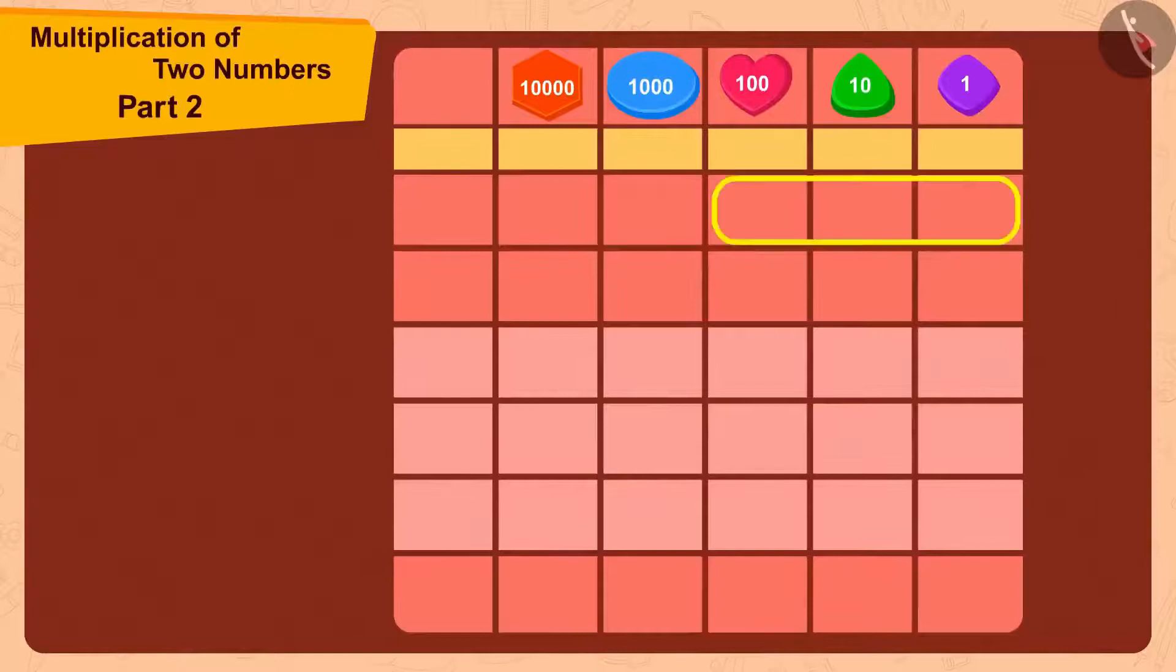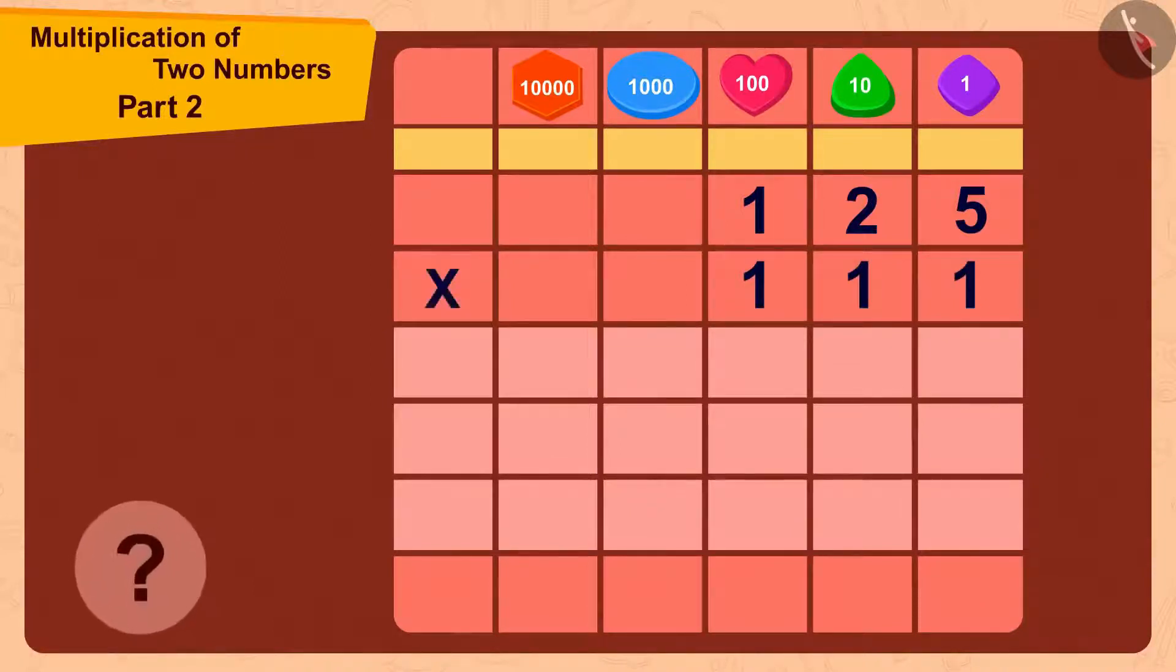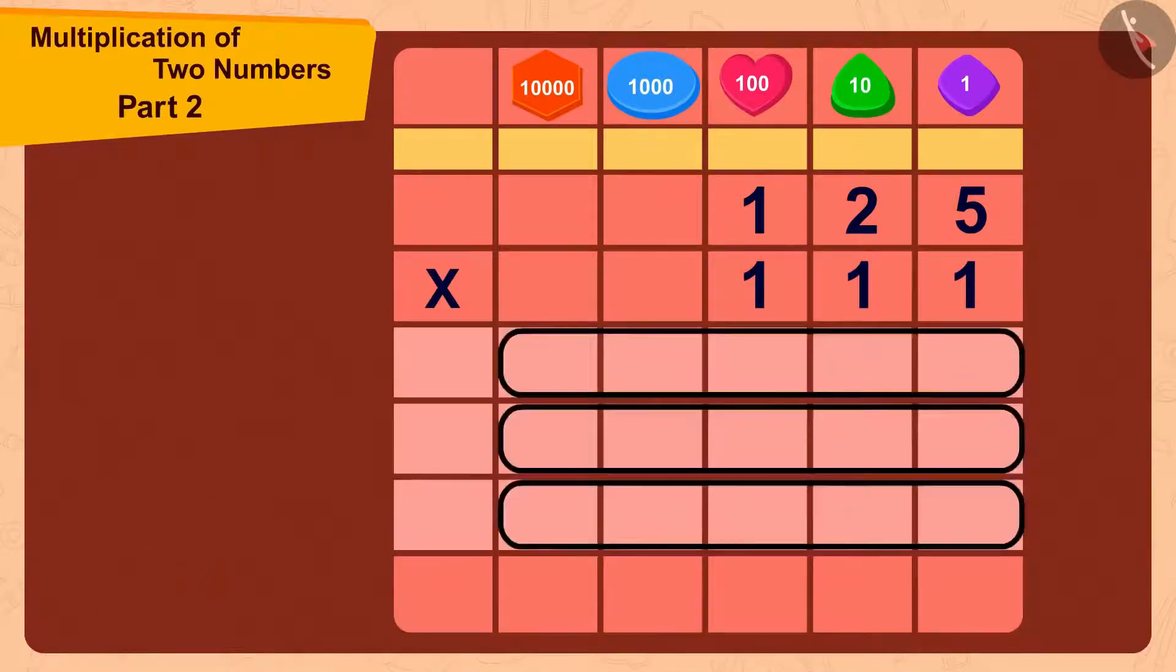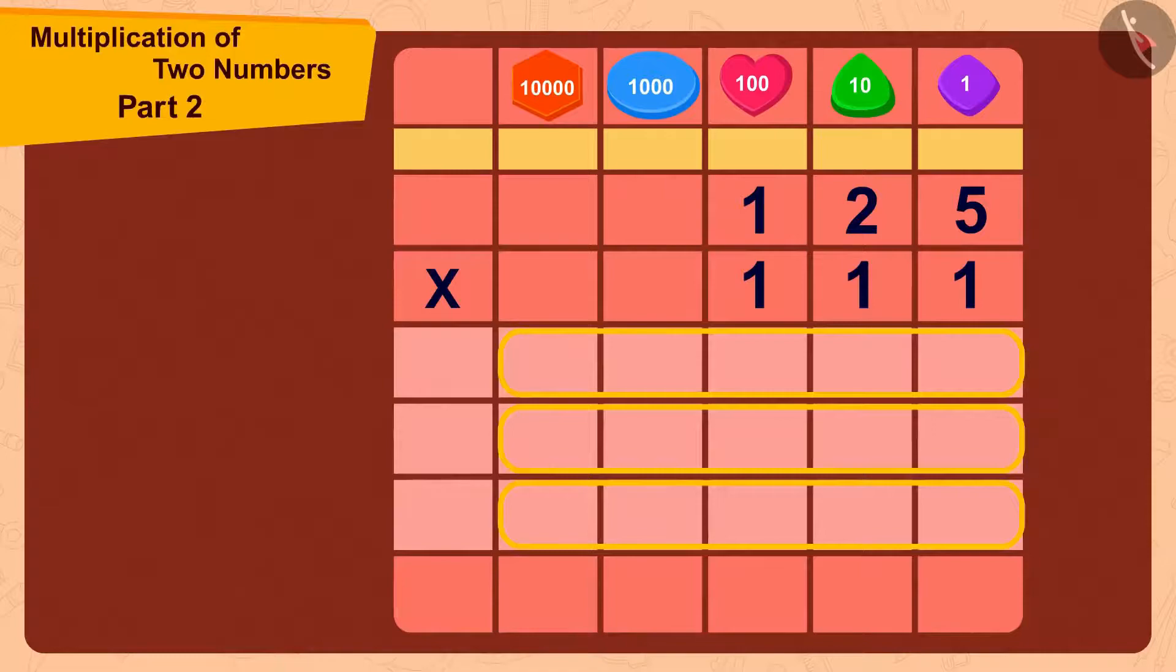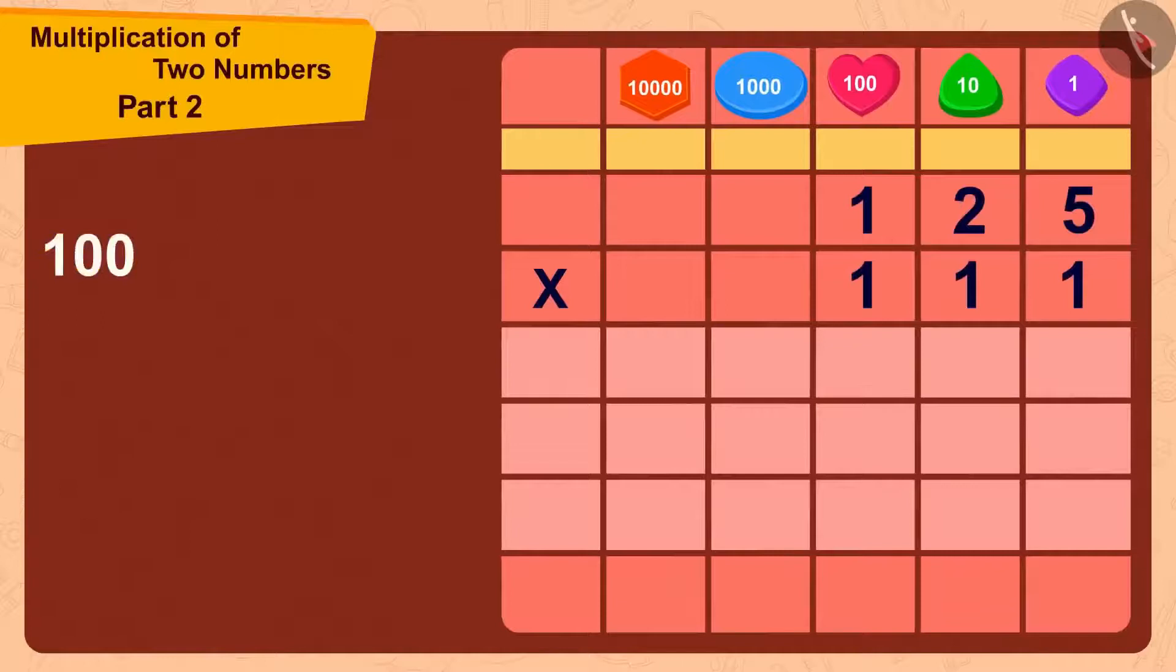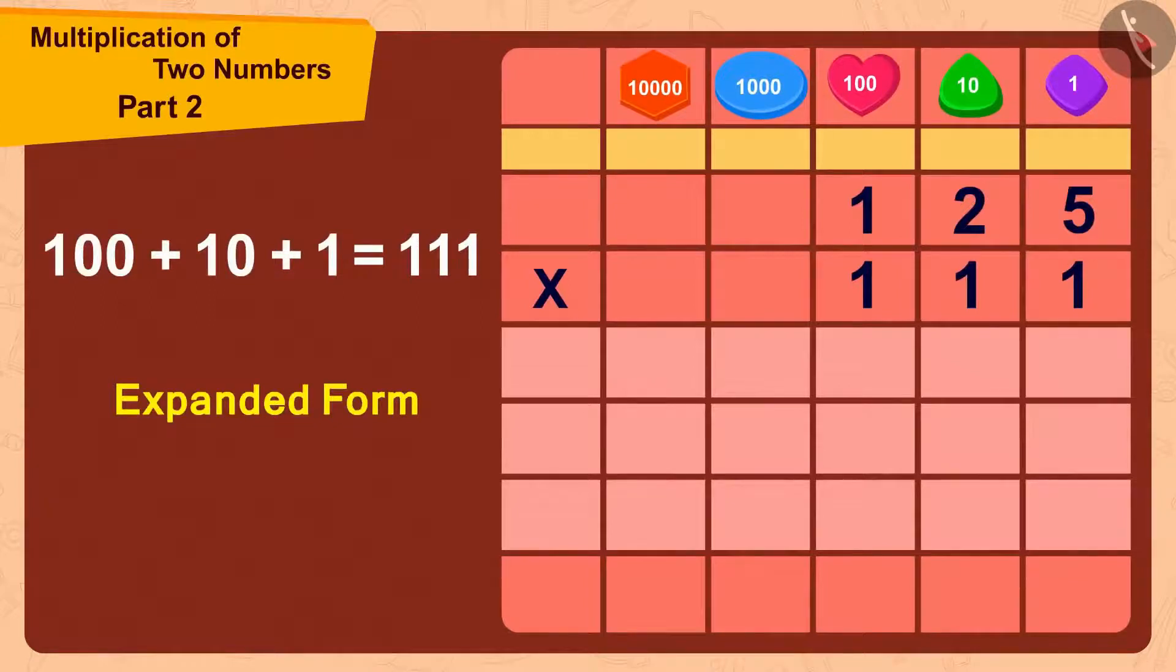Here we are multiplying a three-digit number, 125, with another three-digit number, 111. So in how many steps can we do this? That's right, three steps.